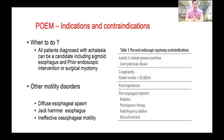POEM procedure — what are the indications? All patients who have been diagnosed with achalasia cardia, including sigmoid esophagus and prior surgery, can undergo POEM. Other motility disorders like diffuse esophageal spasm, jackhammer esophagus, and ineffective esophageal motility — these patients should also be considered for POEM.